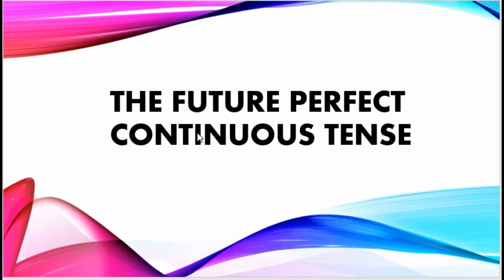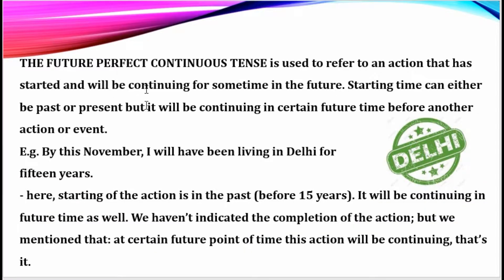So this is the tense that we are going to learn today — the future perfect continuous tense. It is used to refer to an action that has started and will be continuing for some time in the future. The starting time can either be past or present, but it will be continuing up to a certain future time before another action or event.